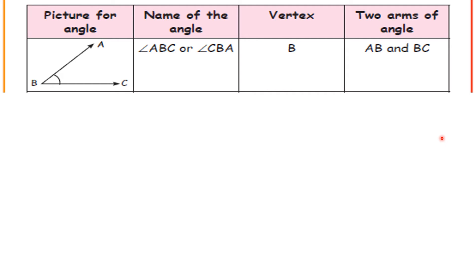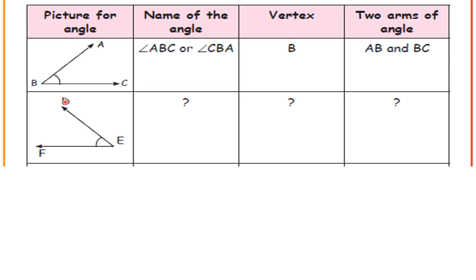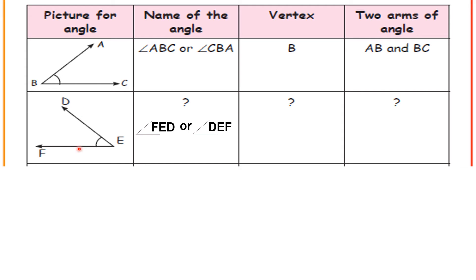Let us go to the next information. See here — angle DEF. Name this angle. You can give two names: angle DEF and angle FED. What is the vertex? Vertex is E. The two arms of the angle are DE and EF. Let us verify: angle FED and angle DEF — vertex is E, and the two arms are DE and EF.